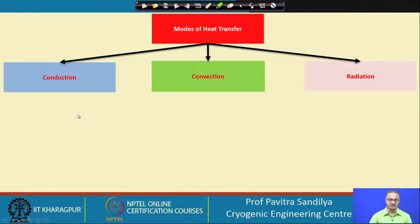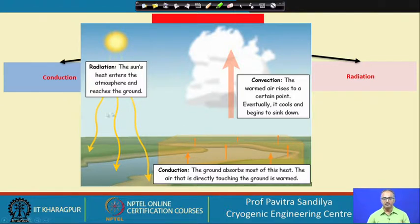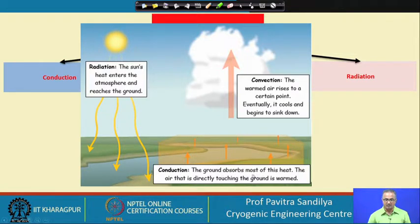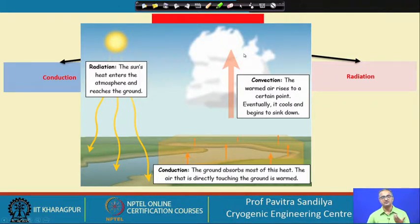After learning about these three modes of heat transfer, we see a combined heat transfer effect in nature: the sun's rays cause radiative heat transfer which enters the atmosphere and heats up all the water bodies or land. The ground absorbs heat from the sun, and the air in touch with the ground gets heated up by conduction. This air rises to the sky and carries water vapor which forms clouds — this occurs due to convection. So in nature, radiation, conduction, and convection take place simultaneously.